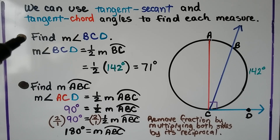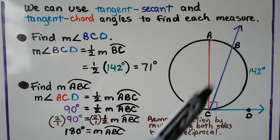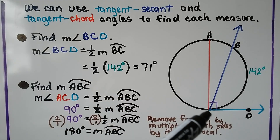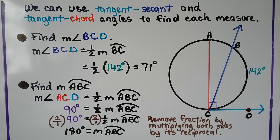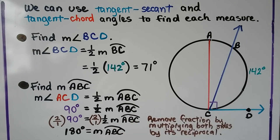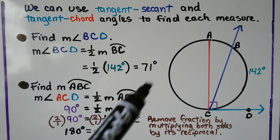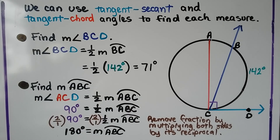For this example, we want to find the measure of angle BCD — that's this secant and this tangent. The measure of angle BCD is half the measure of arc BC. It's telling us that arc BC is 142 degrees, so the angle is half of 142, which is 71 degrees.